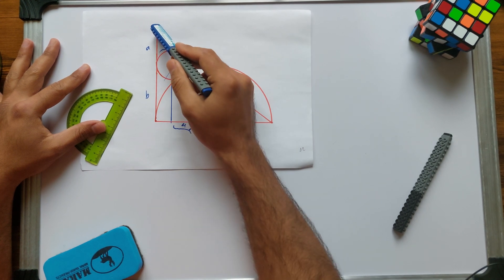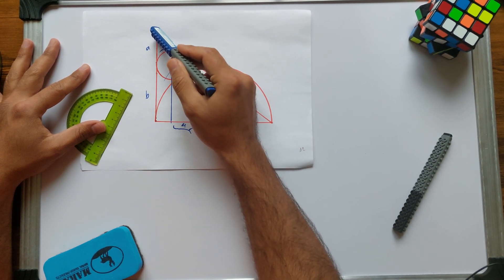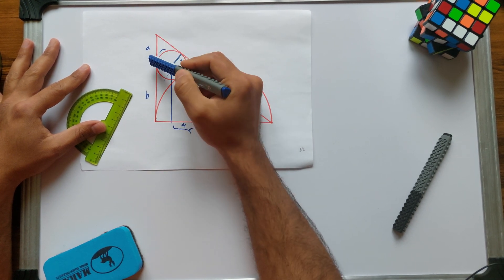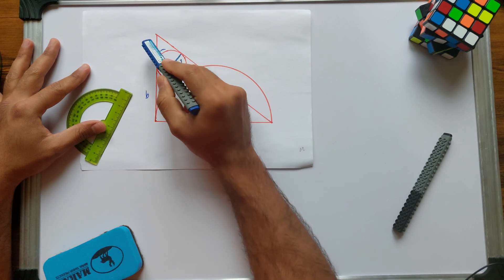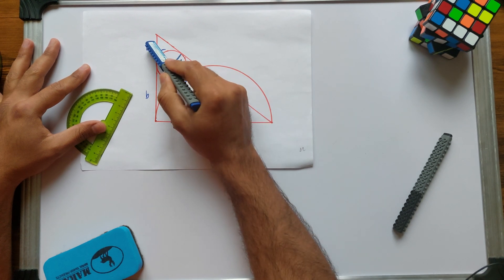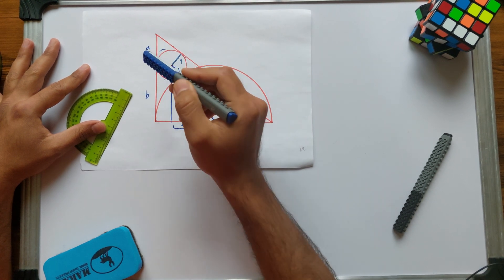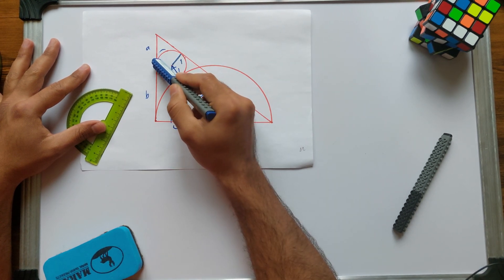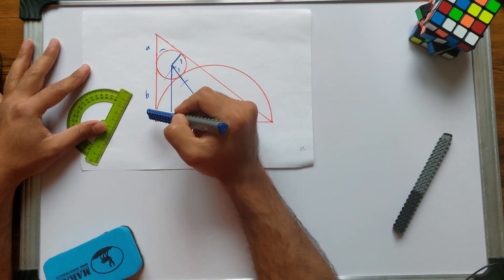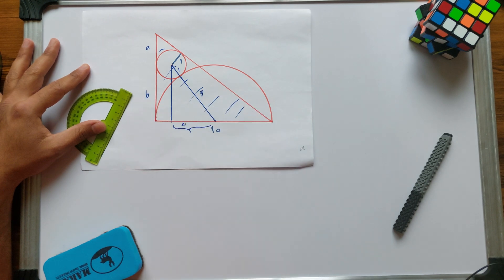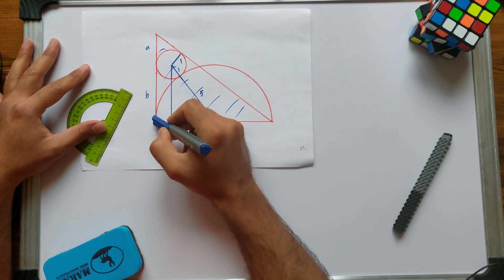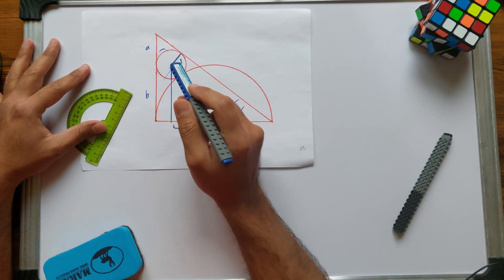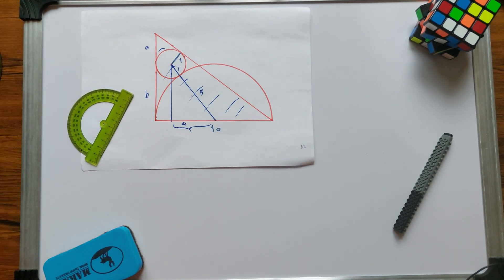Let's divide this whole height into two segments. From the top vertex to the point of tangency of the semicircle, let's denote it as A, and then let's denote the part from the point of tangency to the base vertex as B.